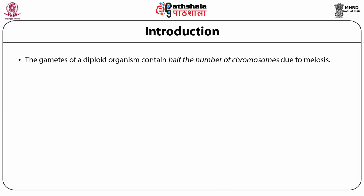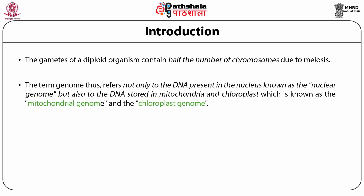The gametes of a haploid organism contain half the number of chromosomes due to meiosis. The term genome thus refers not only to the DNA present in the nucleus, known as the nuclear genome, but also to the DNA stored in mitochondria and chloroplasts, known as the mitochondrial genome and the chloroplast genome.